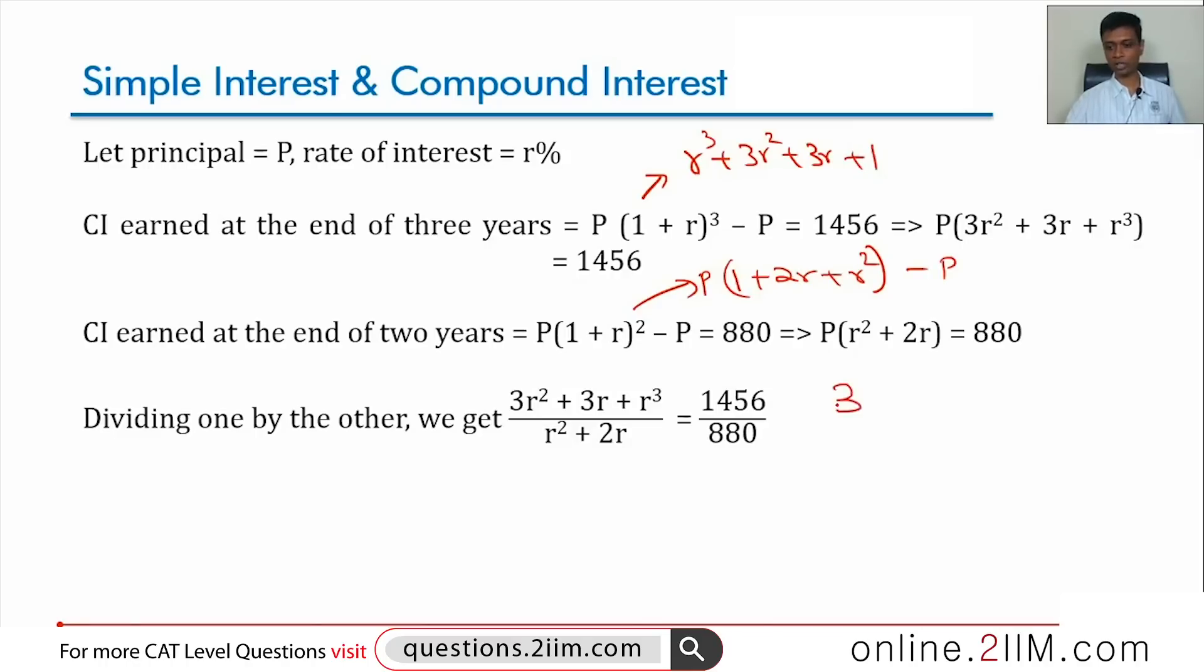Now think about this, write this down, 3R square plus 3R plus R cube by R square plus 2R. The numerator would have had a P, the denominator would have had a P. This is equal to 1456 by 880.